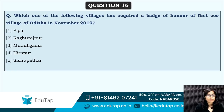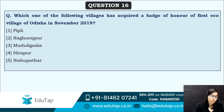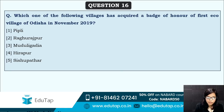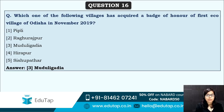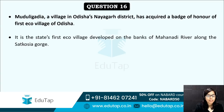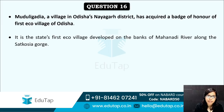Next: which of the following villages has acquired the badge of honor of being the first eco-village of Odisha? The correct answer is option three — Muduli Gadia is the name of the village that has become the first eco-village of Odisha. Muduli Gadia is in Odisha's Nayagarh district — remember the name of the district as well.